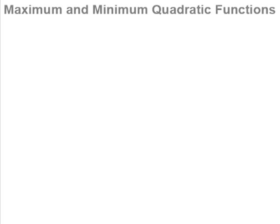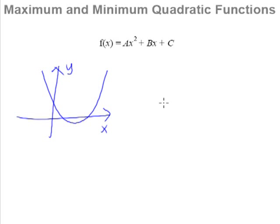We will now talk about the difference between a maximum and a minimum quadratic function. This is a typical quadratic equation. And when you plot a quadratic equation in your normal xy axis, you are bound to get a curve like this or a curve like this.